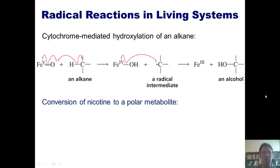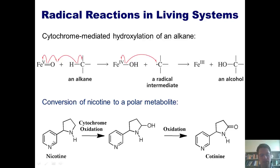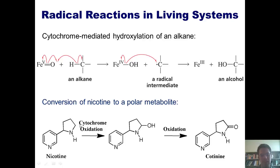Here's a specific example: the conversion of nicotine to a polar metabolite. Nicotine's structure is not extremely polar — it has an N–H bond, which is slightly polar, but it's nonpolar enough that the body would have difficulty excreting it. When nicotine is ingested or inhaled, it encounters a cytochrome enzyme, which through a radical mechanism abstracts a hydrogen at a specific position to form a carbon radical, then donates an OH to that position. This molecule is then further oxidized to form cotinine, which is water-soluble enough to be excreted in the urine.